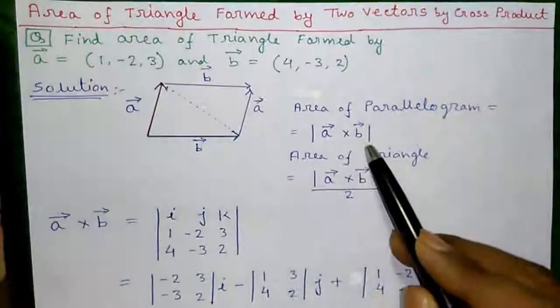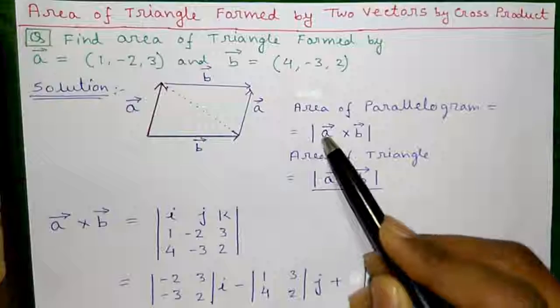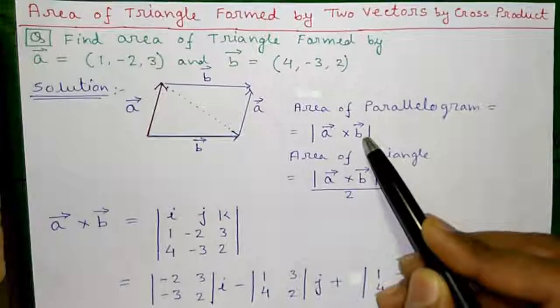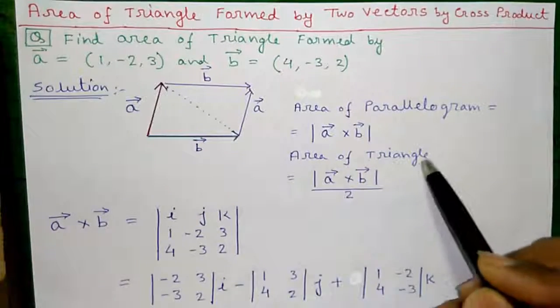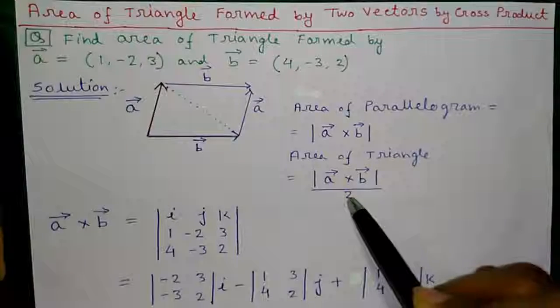So area of parallelogram is given by this formula: modulus of cross product of vector A and B. So the area of triangle will be modulus of A cross B divided by 2.